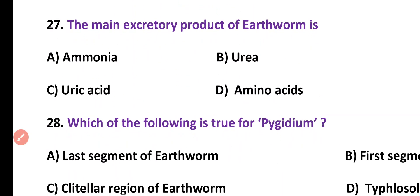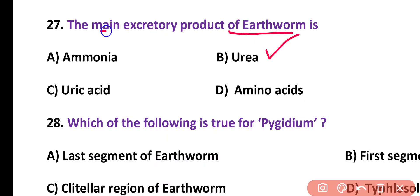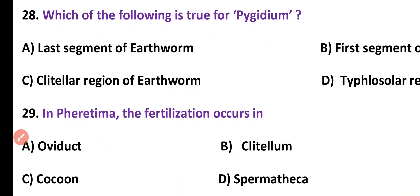Question number 27. Main excretory product of earthworm is: ammonia, urea, uric acid, or amino acid. Correct answer is option B. Earthworm is ureotelic, meaning it excretes urea as its main excretory product.